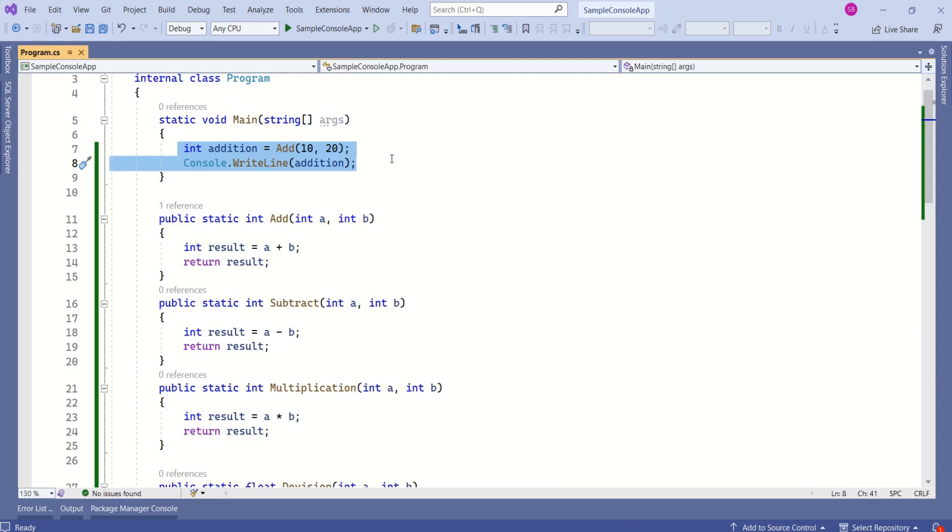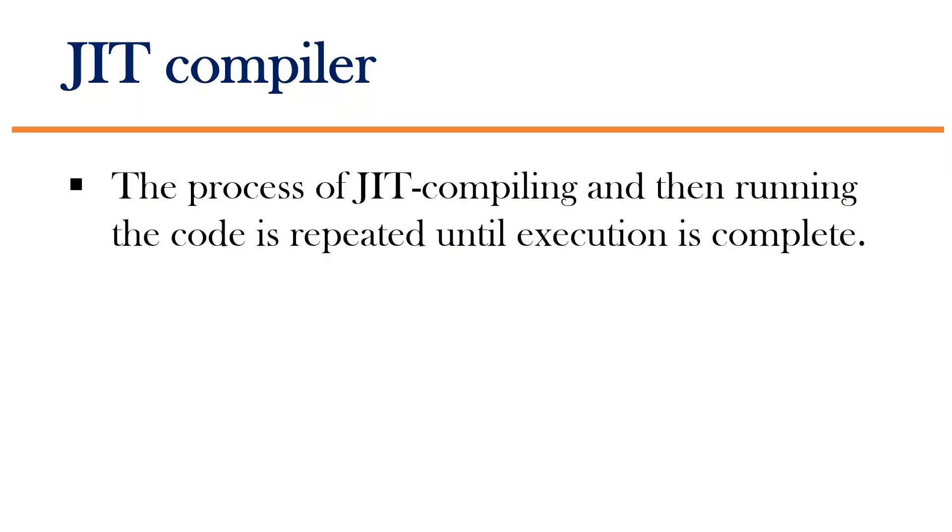And what it will do, it will compile the method and it will store that particular code in a memory. So that next time when you call add method, the same method will not be compiled again and it will be served from a cache. Next time, if you call a new method subtract and if it is not available in a cache, then it will go ahead and compile that method. If it is available in a cache, then it will serve that method from a cache. And the process of JIT compiling and then running the code is repeated until the execution is complete.